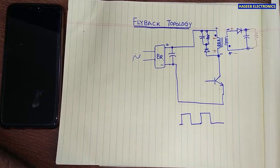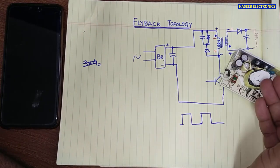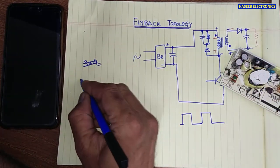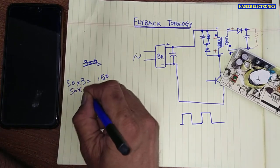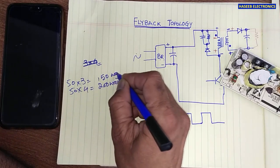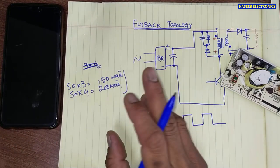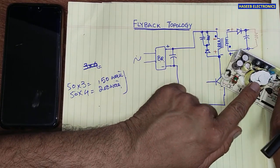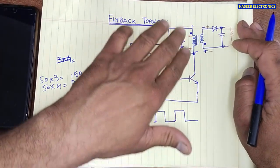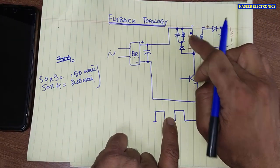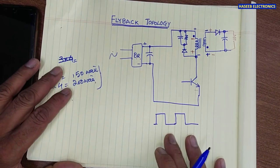Flyback topology uses unidirectional magnetism — in half the period it stores energy, then uses that energy in the off time, also dissipating some in the RCD snubber to protect the MOSFET. It is used to drive low power loads. A transformer used in flyback can provide three to four times more power — for example, a 50W transformer can provide 150 to 200W in flyback compared to half bridge or full bridge where bidirectional magnetism is used. The basic principle of flyback is: store energy in the on time, and use that stored energy in the off time. I hope this video is informative.